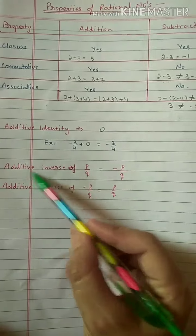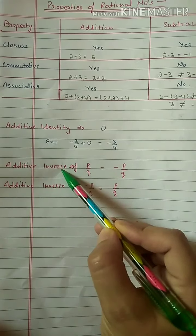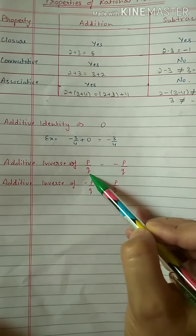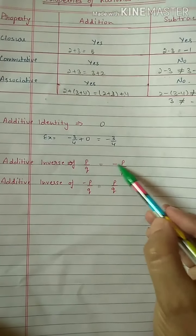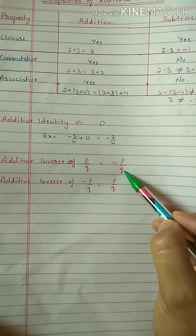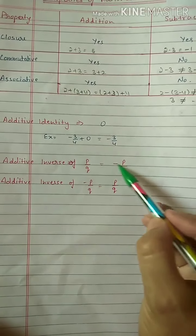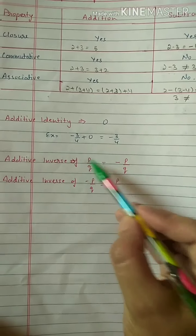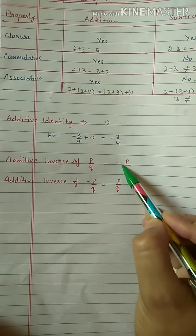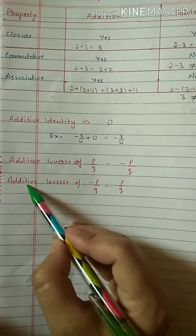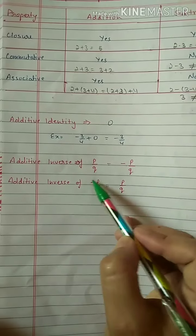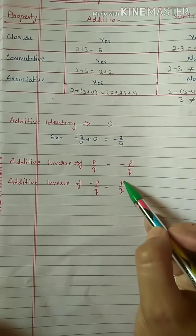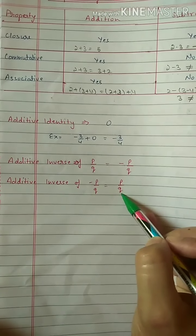After this we have additive inverse. The additive inverse of P by Q is minus P by Q — you change the symbol. If it is plus, make it minus. The additive inverse of minus P by Q is plus P by Q.